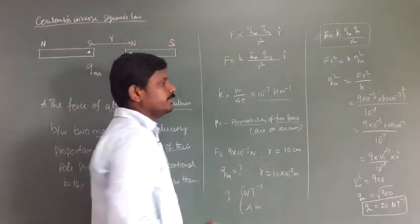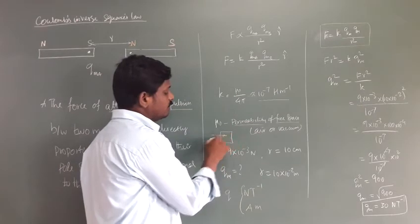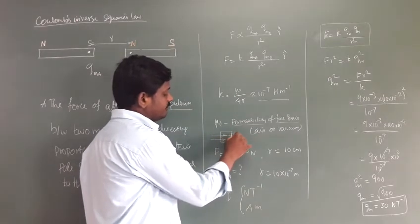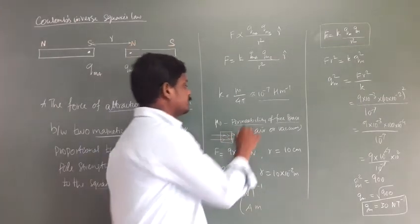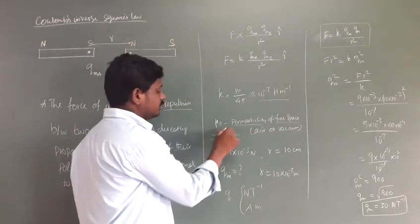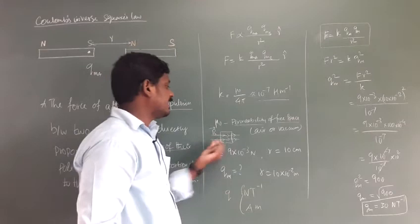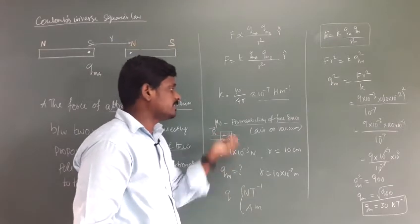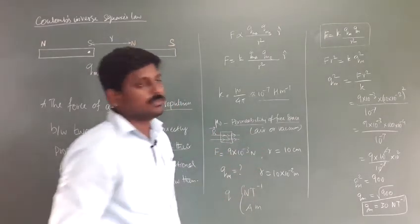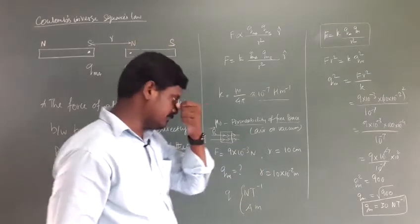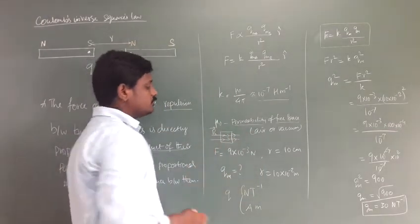Permeability means how much a material allows the magnetic field lines through it — that is permeability. It describes how a material allows the magnetic field inside it. If it is an electric field, the corresponding quantity is permittivity, that is epsilon naught (ε₀). For air or vacuum, the magnetic quantity is μ₀.